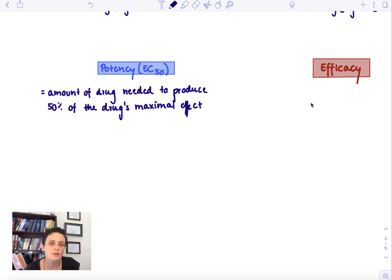Which type of graph would you look for potency? Well, it needs to be a graph where we have the drug concentration. We want to know the amount of drug that is needed to get a certain effect. So we need a drug concentration effect graph.